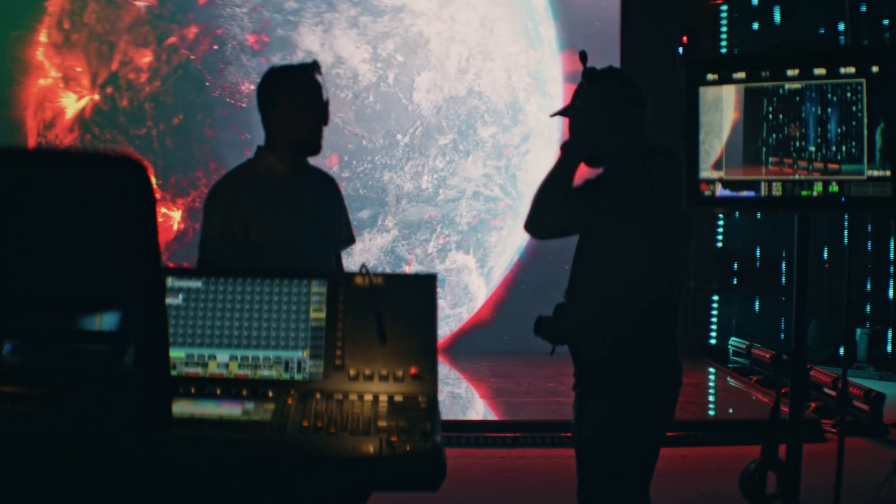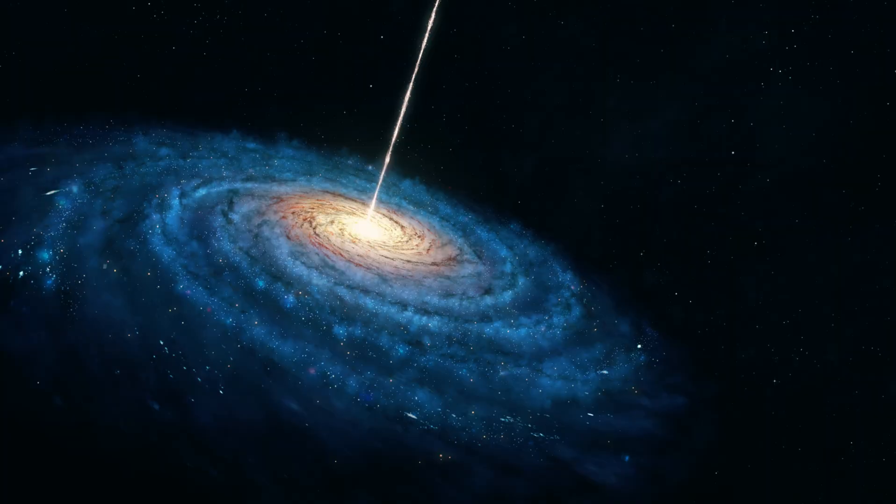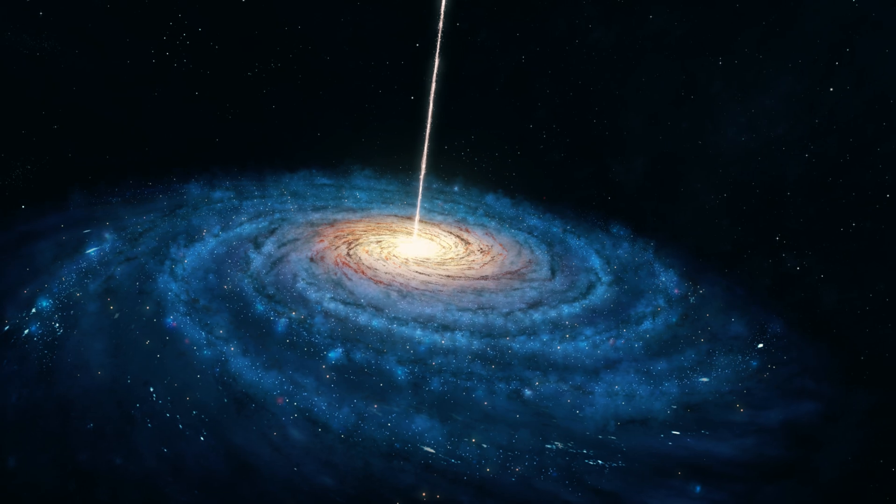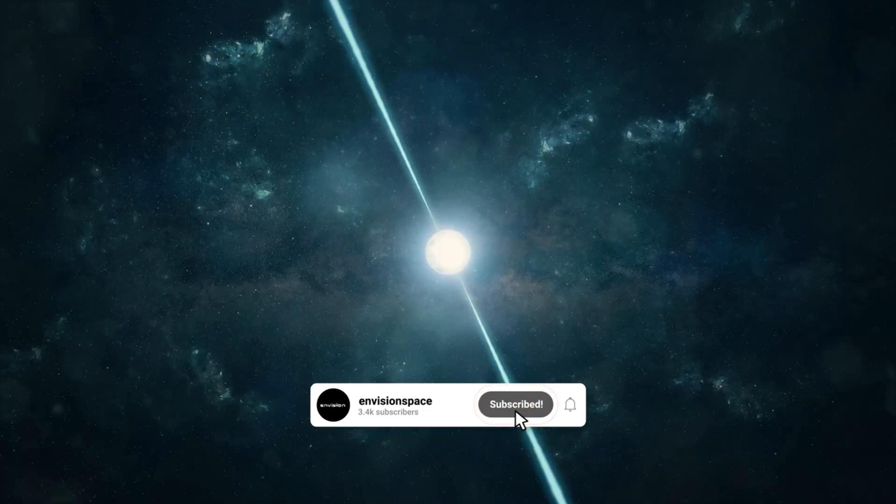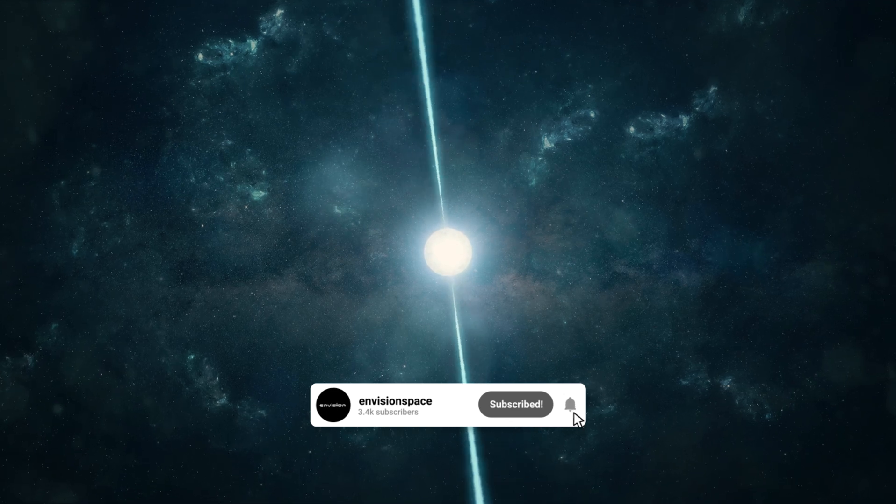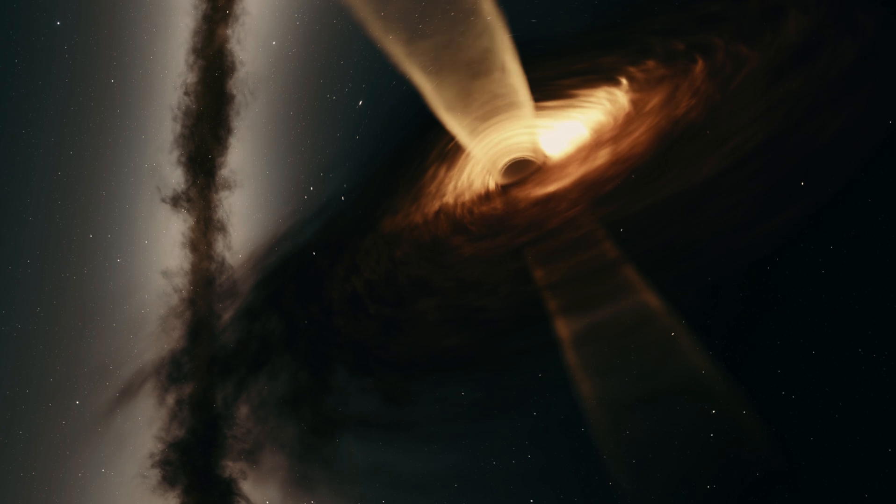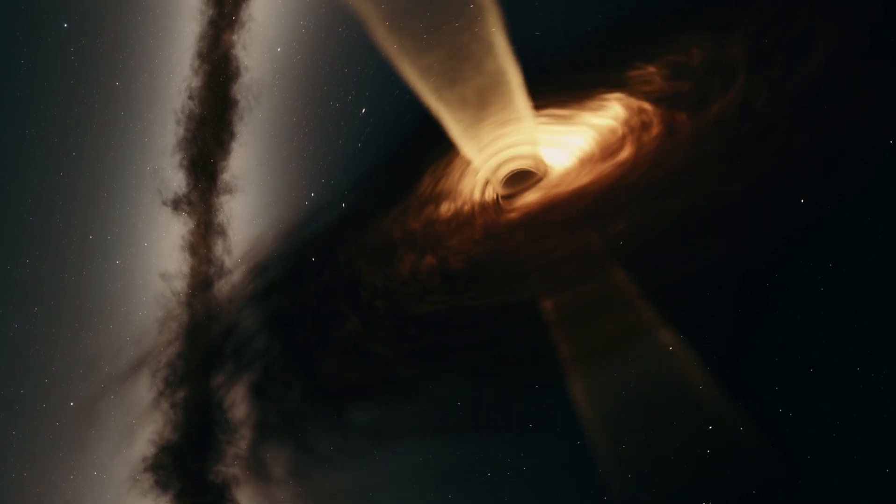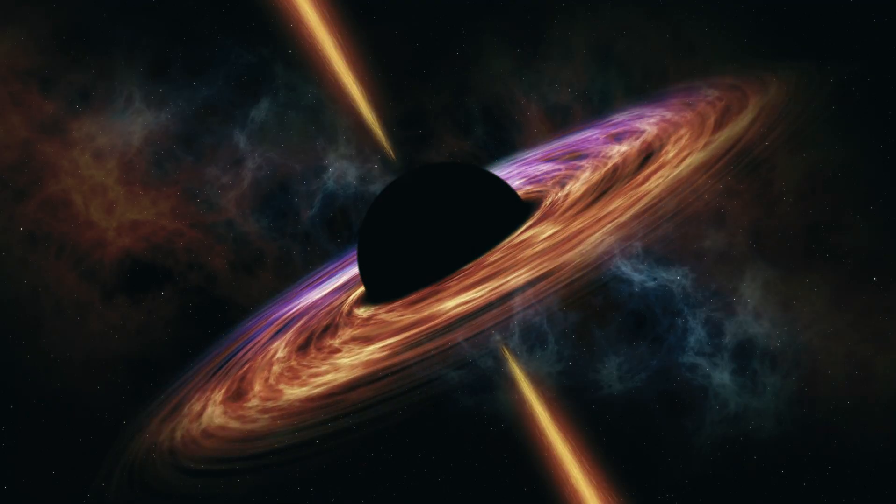It is thought that supermassive black holes, like the one in our Milky Way, are frequently found in the centers of galaxies. They, therefore, have a major effect on the dynamics and evolution of galaxies. An accretion disk is created around a supermassive black hole when matter, such as gas and stars, approaches it too closely. The AGN is extremely bright because this disk of whirling material heats up and releases powerful radiation at different wavelengths.